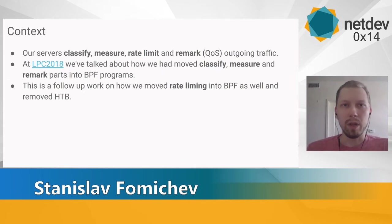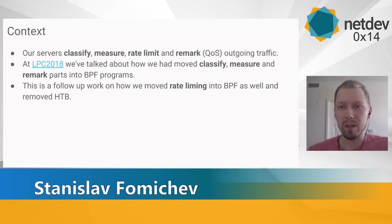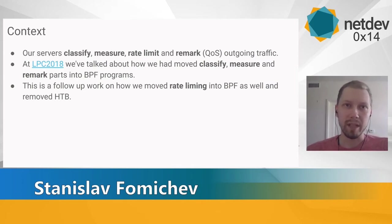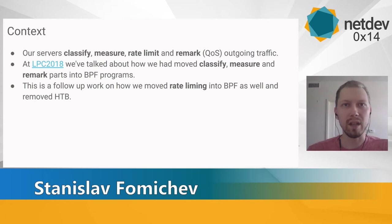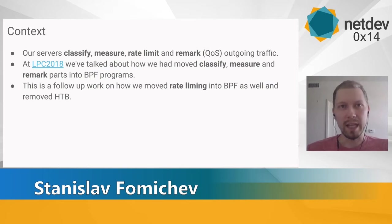Let's start with some context, because we've previously shared some parts of this work at Linux Plumbers Conference. Our servers classify, measure, rate limit, and remark outgoing packets — meaning for every outgoing packet, we do the following steps. First is classification: we find out which container this packet belongs to. I'll call this container an aggregate. Many TCP flows can belong to the same aggregate.